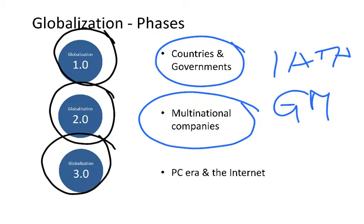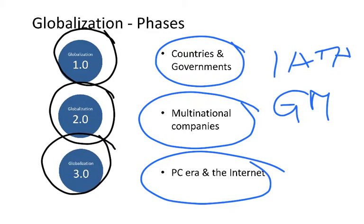The third phase, called 3.0, has the PC era and the internet — basically the internet — as its main drivers. One example is what is happening right now while you are listening to this video: it was created and recorded in Istanbul, uploaded to YouTube — a platform where the video is stored somewhere in the US, in California — and you are listening from any point in the world. Similarly, when it comes to booking a ticket, you use the internet no matter which airline worldwide you are using.